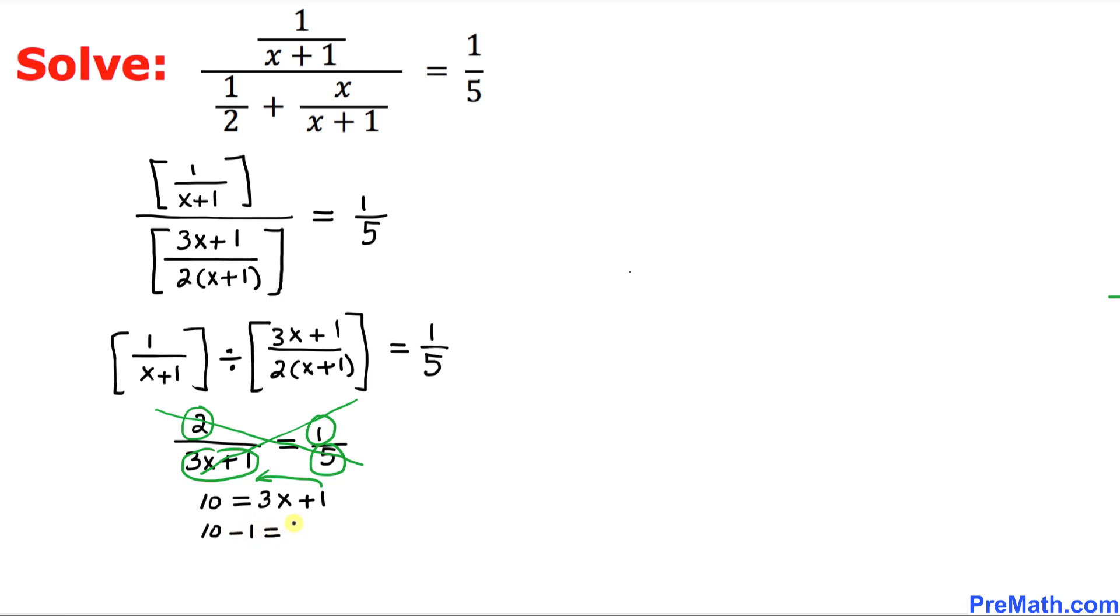That means we got 9 equal to 3x. Now we are going to divide both sides by 3. So that means our x value turns out to be simply 3.